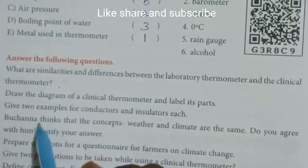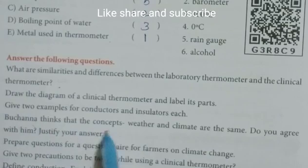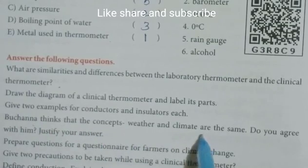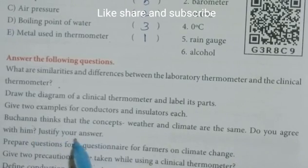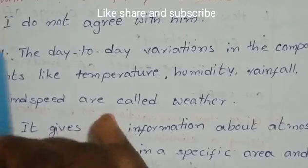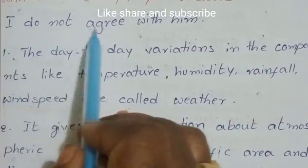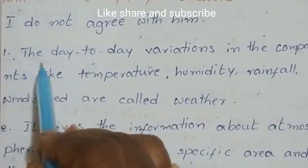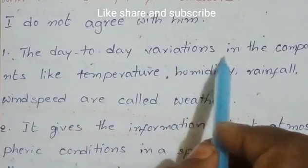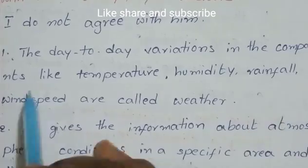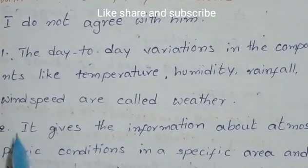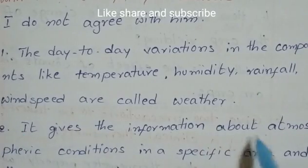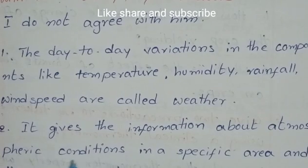Fourth question: Butchana thinks that the concepts weather and climate are the same. Do you agree with him? Justify your answer. I don't agree with him. The day-to-day variations in components like temperature, humidity, rainfall, and wind speed are called weather. It gives information about atmospheric conditions in a specific area at a given time.